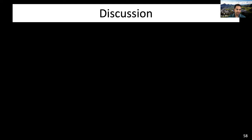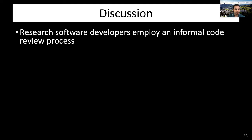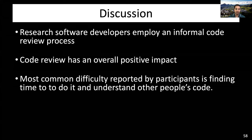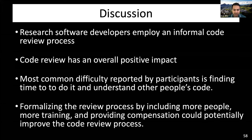To wrap up the second part: in general, research software developers employ an informal code review process. Code review has an overall positive impact and participants found it to be very important in their project. The most common difficulty reported is finding time to do it and understanding other people's code. Formalizing the review process by including more people, more training, and providing compensation could potentially improve the code review process.